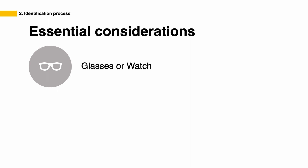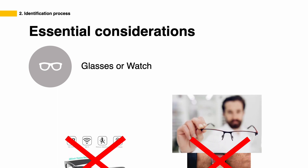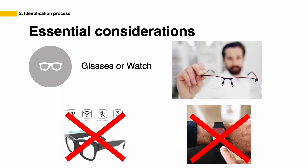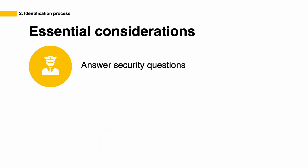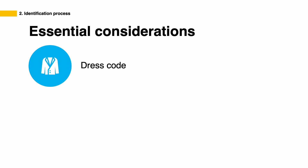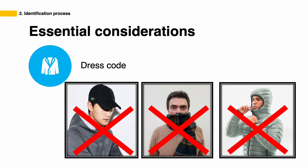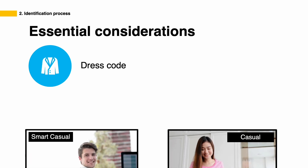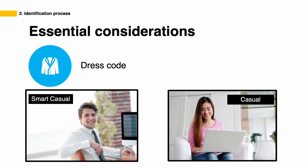Glasses or watch: if you are wearing glasses during your test, show the evaluator that the glasses do not have a recording device on them. Wearing a watch during your test is not allowed. Security questions: you have to answer one or two security questions, and the answers are related to your license information. Dress code: any piece of clothing that covers your face is not allowed. In general, the dress code for test takers is smart casual or casual.